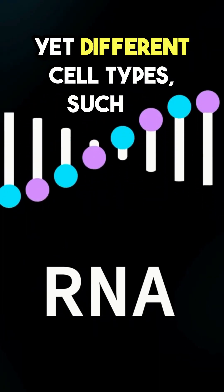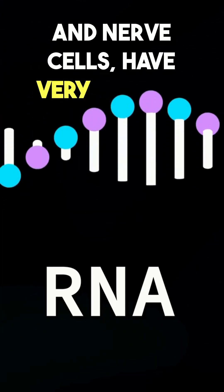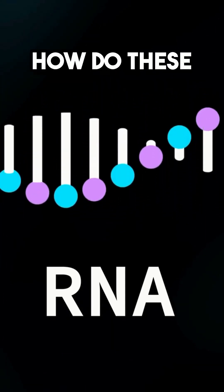Yet different cell types, such as muscle and nerve cells, have very distinct characteristics. How do these differences arise?